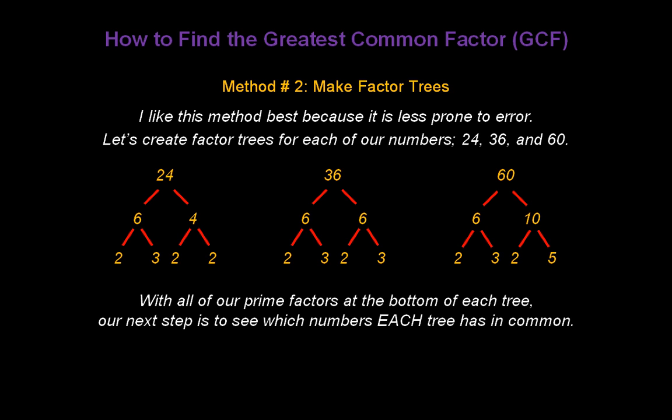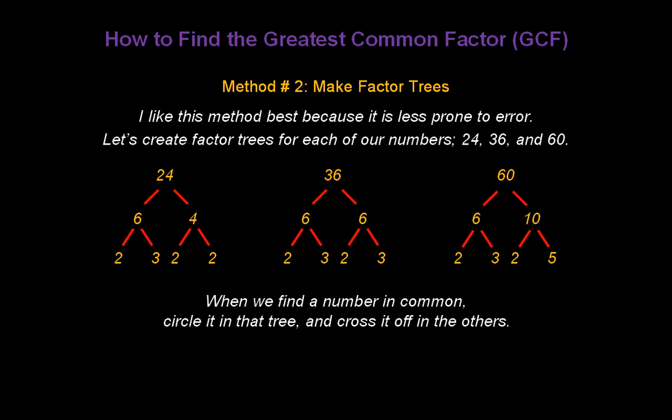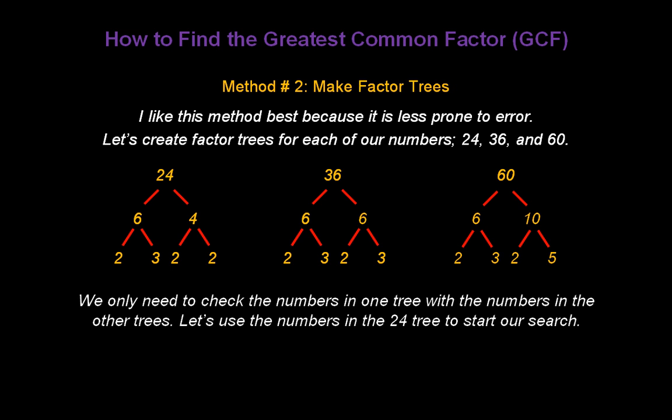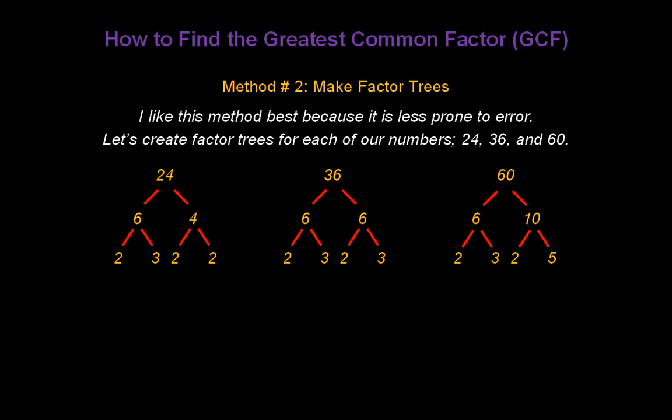With all of our prime factors at the bottom of each tree, our next step is to see which numbers each tree has in common. When we find a number in common, circle it in that tree and cross it off in the others. We only need to check the numbers in one tree against the numbers in the other trees. Let's use the numbers in the 24 tree to start our search.